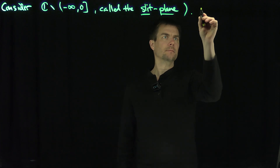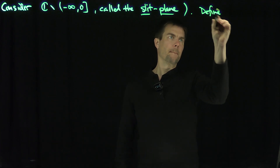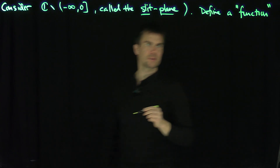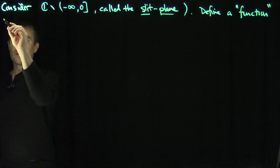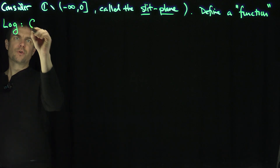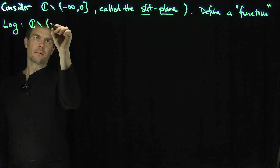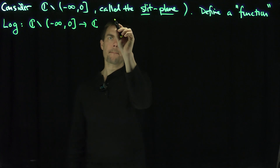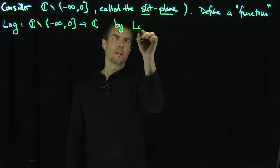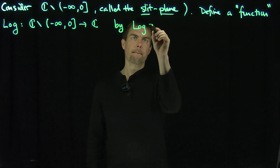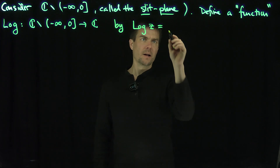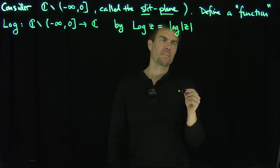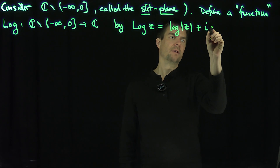Now define a function — I'm going to put that in quotation marks — LOG (capital), which maps this slit plane into C. By the formula: LOG of z is going to be the ordinary real logarithm of the modulus of z, plus i times the argument of z.